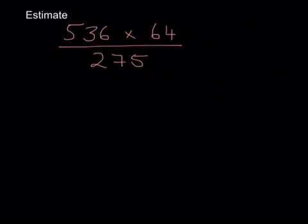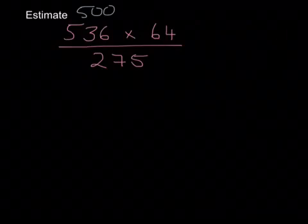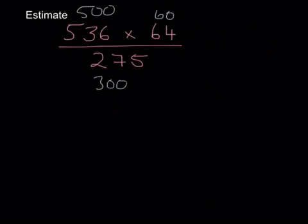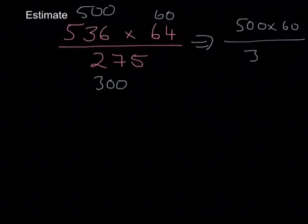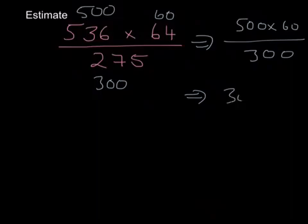Here's the answer to the question I just set. I gave you 536 times 64 divided by 275. Let's start by rounding these to one significant figure and making the numbers nice. So 536 is 500, 64 is 60, and 275 is 300. Rewriting the question, we've got 500 times 60 on top and 300 on the bottom. 5 times 6 is 30, and that's with three zeros, over 300.